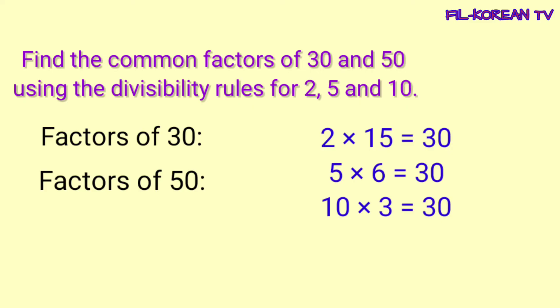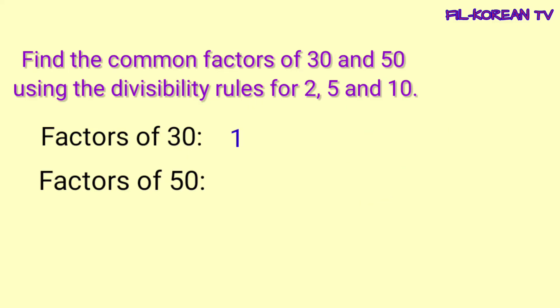Ang mga ito ay factors ng 30. Maliban dito, mag-iisip pa tayo baka mayroon pang ibang factors ang 30. Mayroon pa, at ito ay 1 and 30, kasi kapag i-times natin 1 times 30 equals 30. Isulat na natin lahat ng factors ng 30, simula sa mababang number papunta sa mataas. Ang factors ng 30 ay 1, 2, 3, 5, 6, 10, 15, and 30. Ito lahat yung factors ng 30.